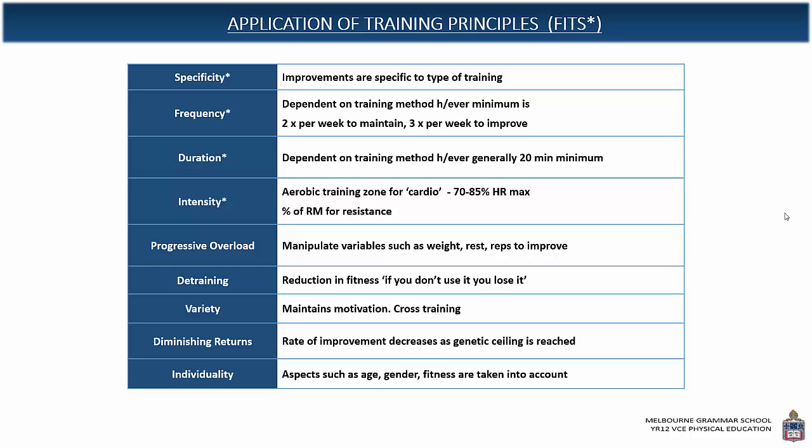We talk about progressive overload — adding a variable or perhaps taking one away, such as rest, in order to make training harder. You should only ever target one variable at any point in time, and it should only be manipulated by up to 10%. For example, if you're doing a bench press at 50 kilos for three sets of 10, when you overload the weight, you would only increase it to up to 55 kilos, as that is 10% of 50.